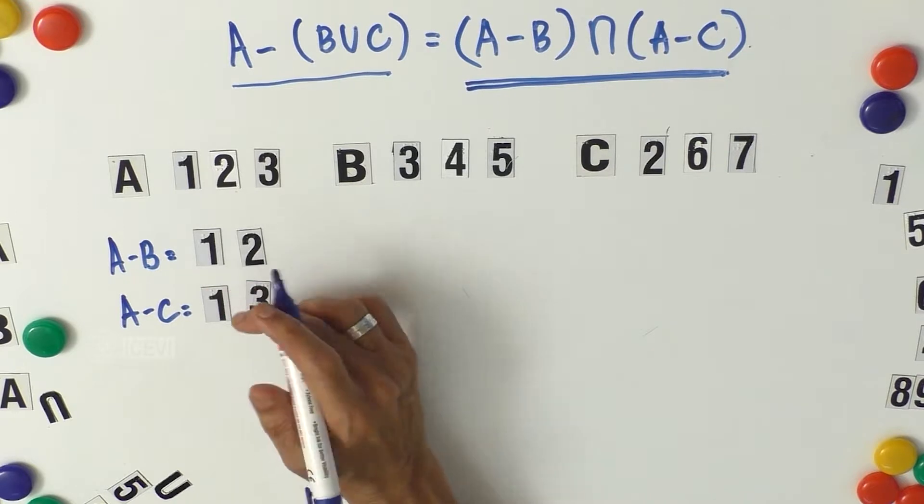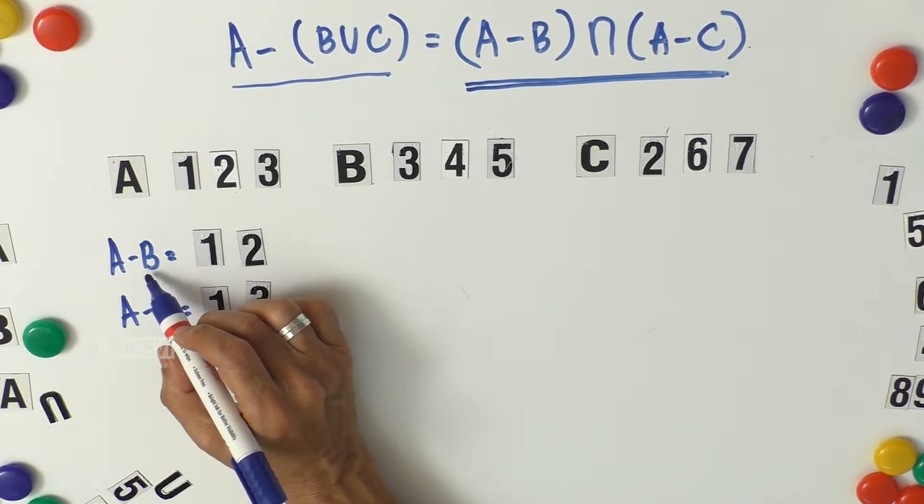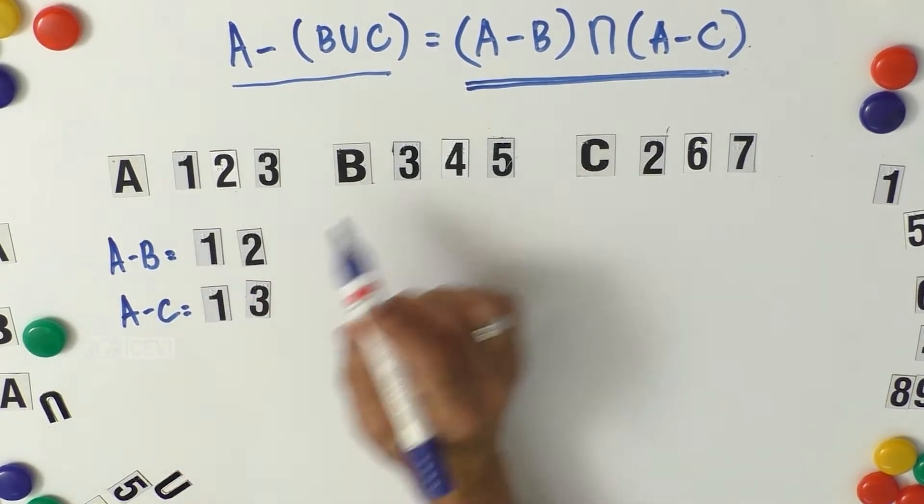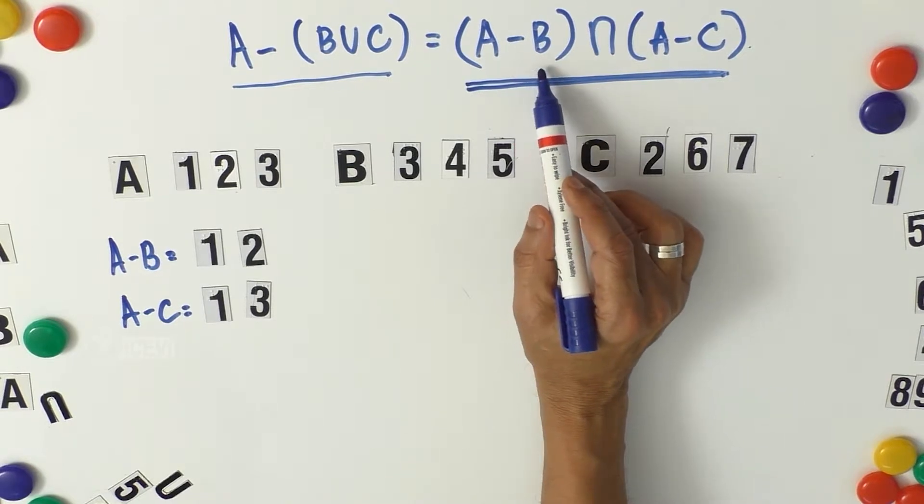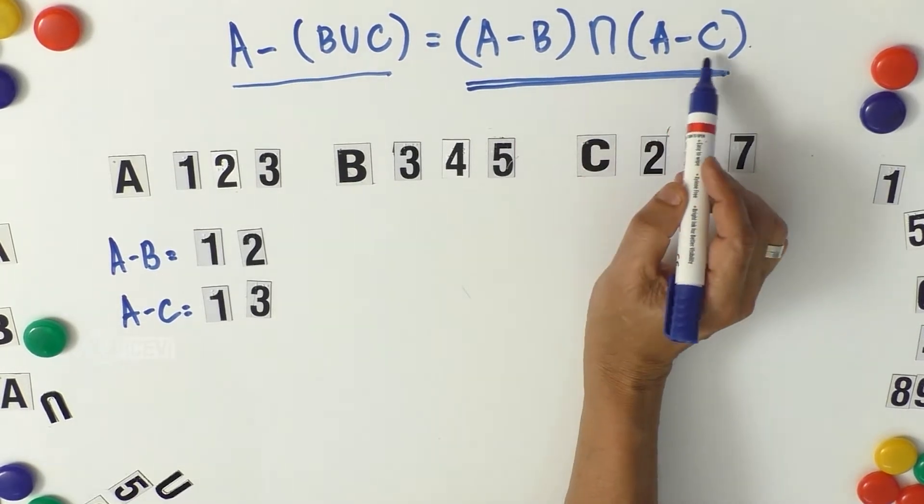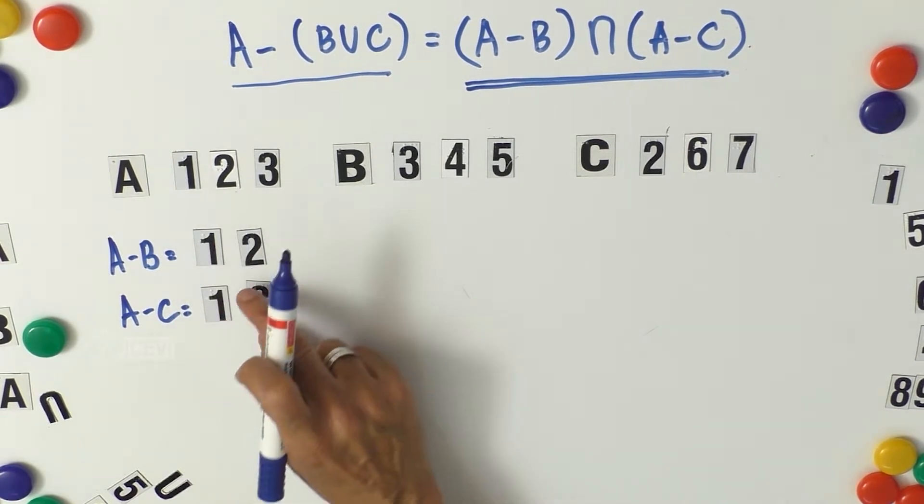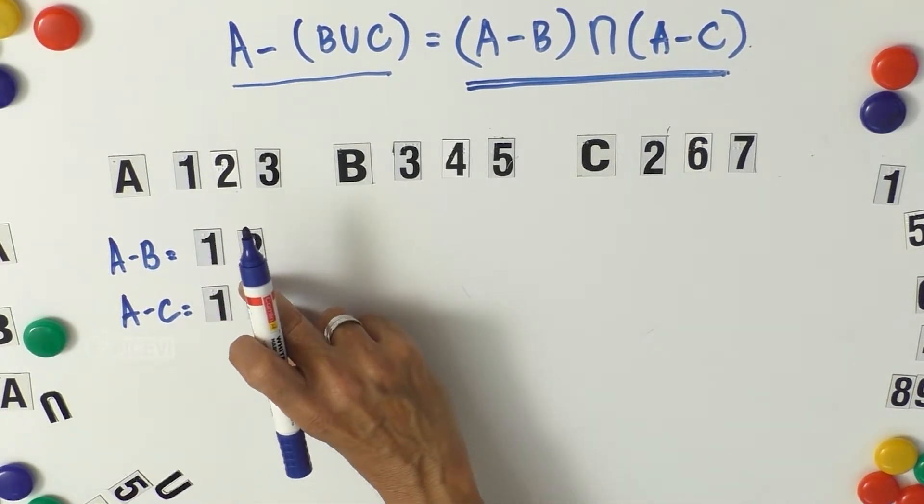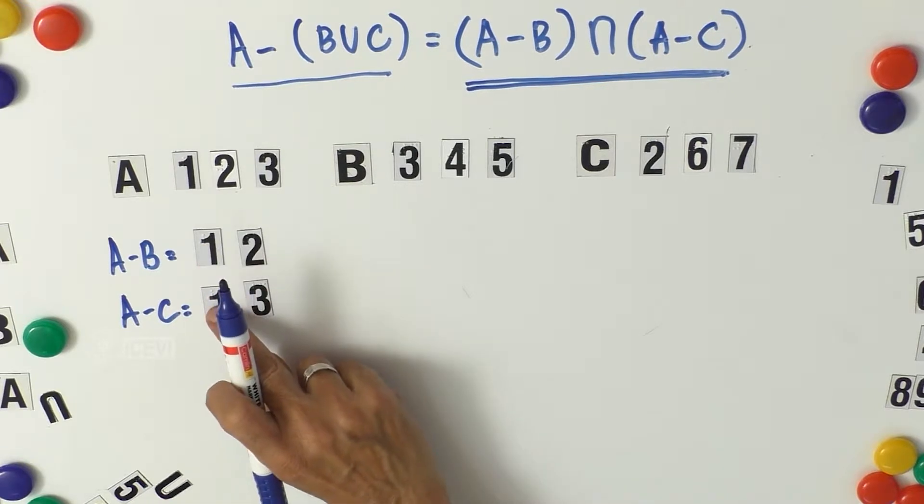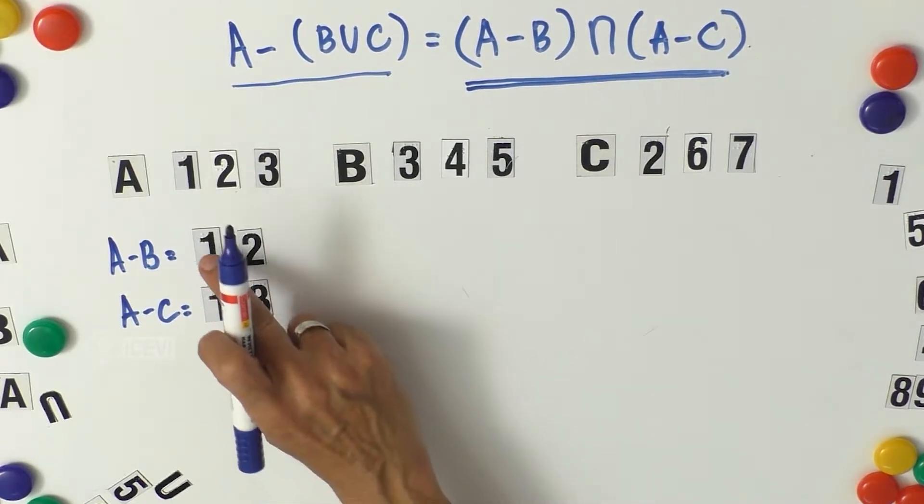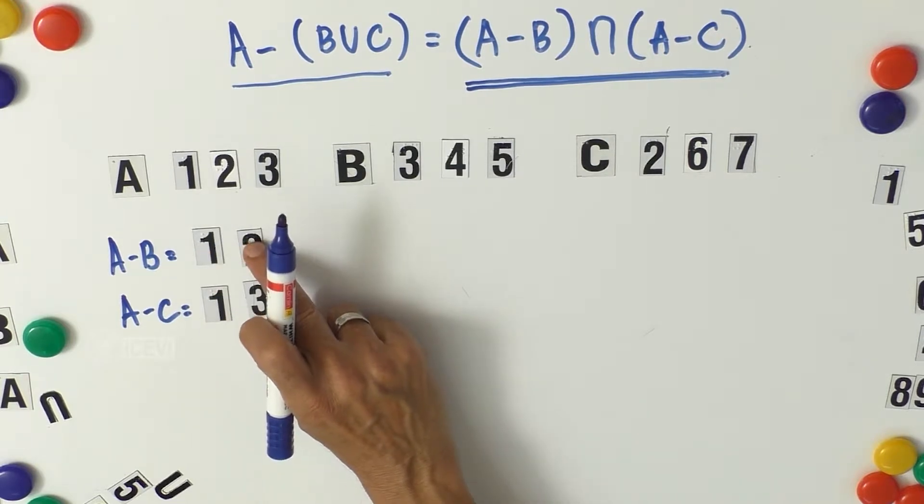Now we have found out the two values A minus B and A minus C. Next we have to find out A minus B intersection A minus C. So that means we have to find the commonality between A minus B and A minus C. What is common here?